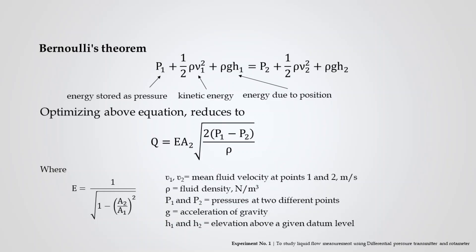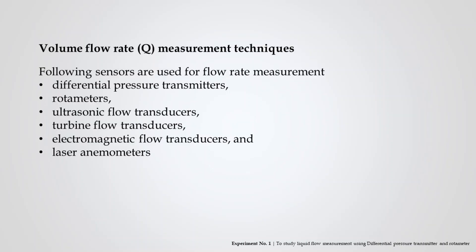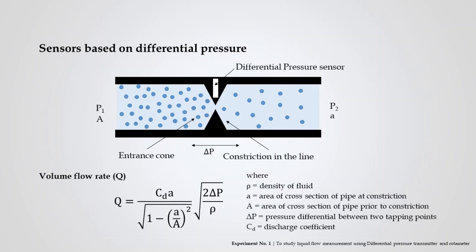Students can solve the above equation to find the volume flow rate. Thus, the volume flow rate Q is directly proportional to the square root of differential pressure. Flow rate measurement can be carried out using differential pressure transmitters, rotameters, ultrasonic flow sensors, turbine flow sensors, electromagnetic flow transducers, and laser anemometers. Flow sensors of this type use an obstruction along the flow line such as a nozzle, an orifice plate, a venturi tube, or a pitot tube. The basic relationship between the pressure differential and flow rate is expressed by the following equation.